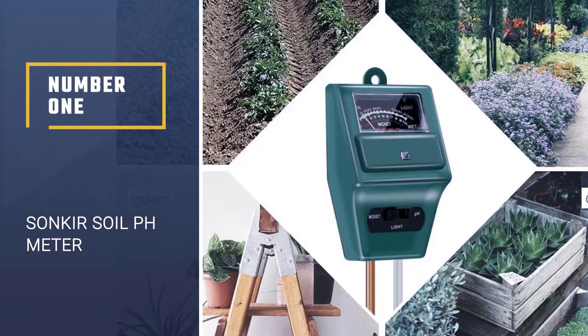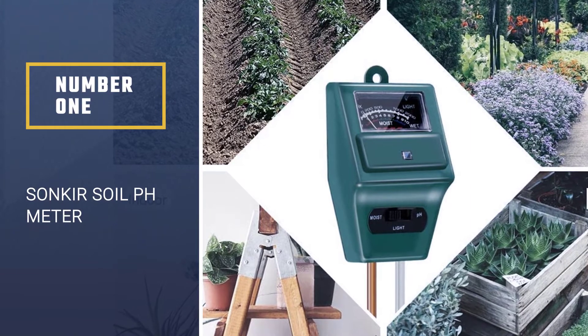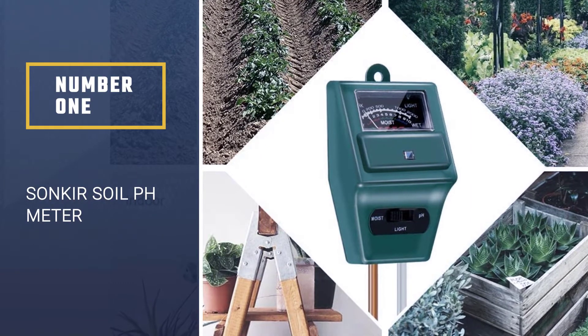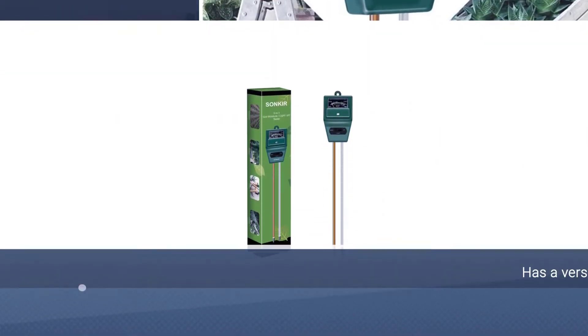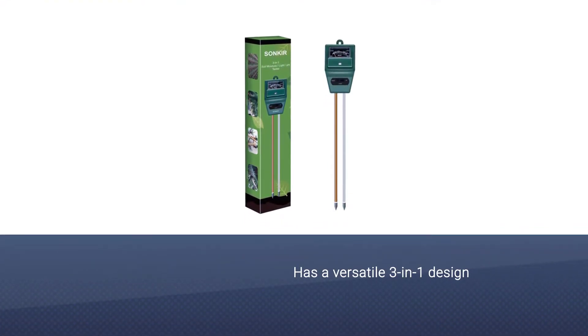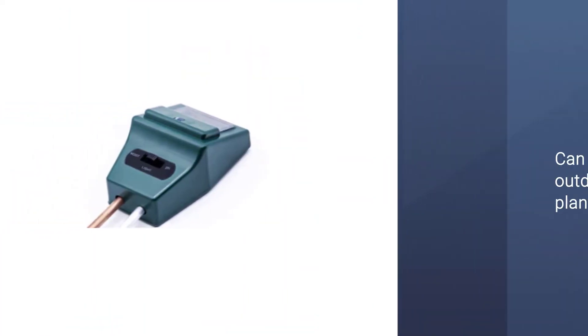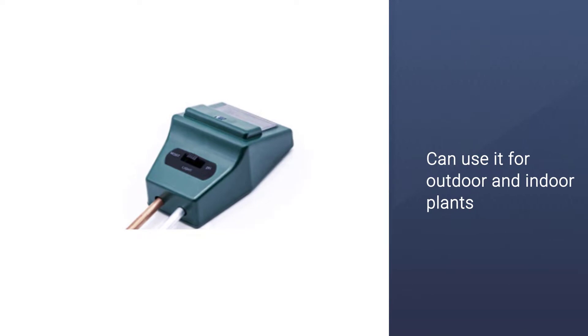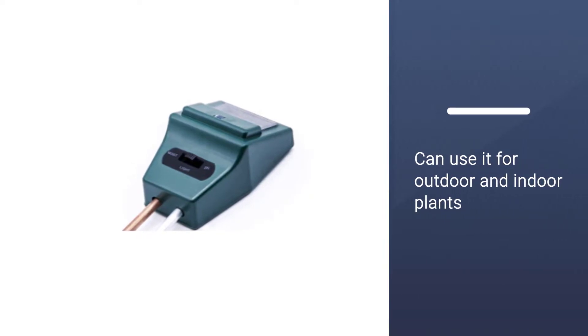Number one: Songkir Soil pH Meter. The tester has a versatile three-in-one design that allows you to monitor all aspects of your plant's soil conditions. You can use it for outdoor and indoor plants, on the lawn, and even around the farm. It can show the pH value of the soil, detect moisture, and determine if your plants are getting enough sunlight.